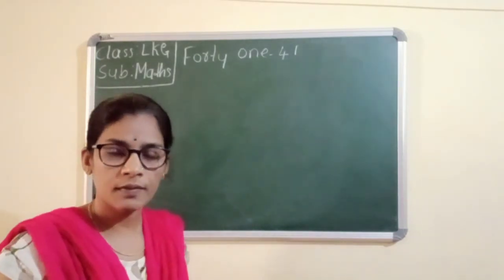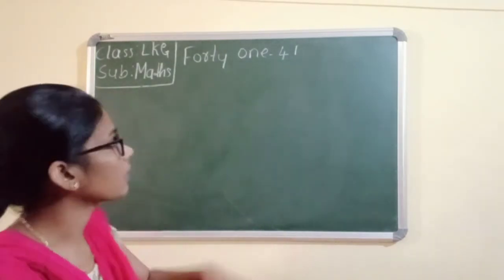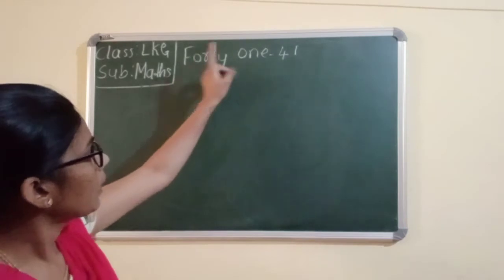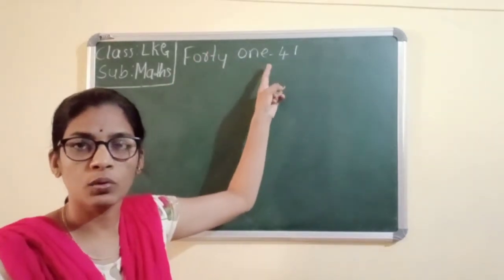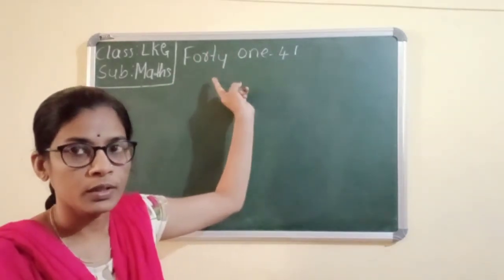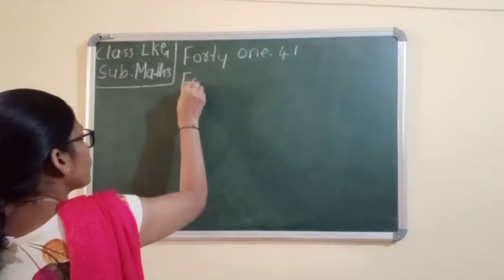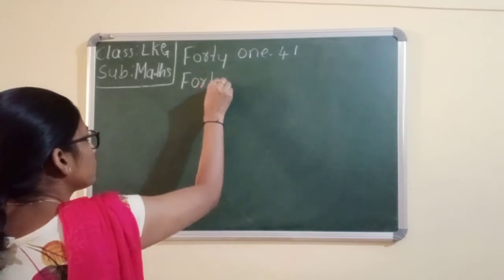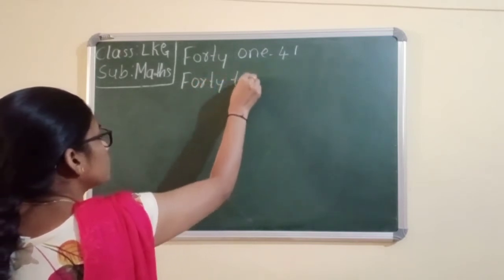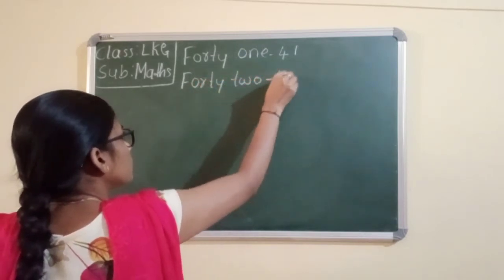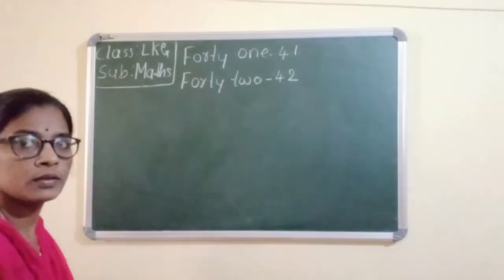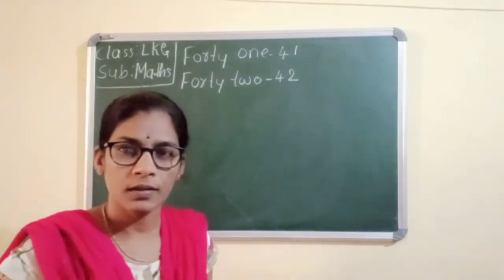Next one, 42. Same children, you should write here 40, and next you write here T-W-O, two. 42. Easy. Next one.